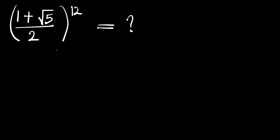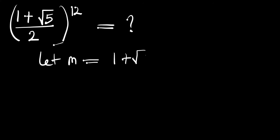Hello, you are welcome. In this video we are going to simplify (1 plus root of 5) divided by 2, raised to the power of 12. We can let m equal what is inside this bracket, that is (1 plus root of 5) divided by 2. So this whole expression becomes m raised to the power of 12.